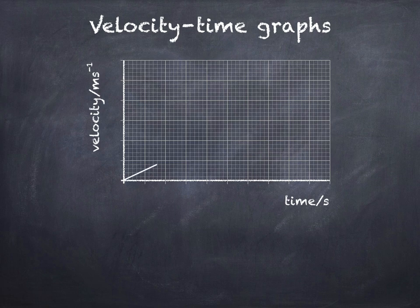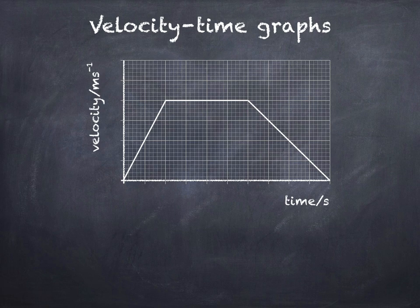A straight diagonal line going up from left to right represents a constant acceleration, and the steeper the line, the greater the acceleration. A horizontal line represents a constant velocity, and a straight diagonal line which goes down from left to right represents a constant deceleration, or negative acceleration. If the object had the same decrease in velocity over a shorter time, then the deceleration would be greater.